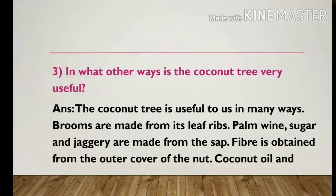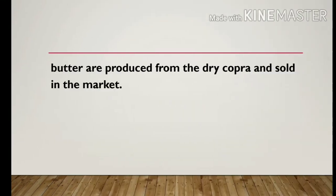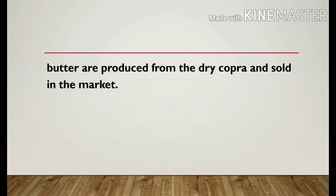Question number 3: In what other ways is the coconut tree very useful? Answer: The coconut tree is useful to us in many ways. Brooms are made from its leaf ribs. Palm wine, sugar and jaggery are made from the sap. Fibre is obtained from the outer cover of the nut. Coconut oil and butter are produced from the dry copra and sold in the market.